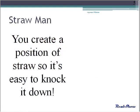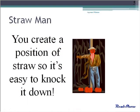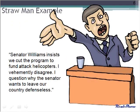Straw man. A straw man is responding only to an extreme or exaggerated representation of the opposing view, or even creating a false position for it. In other words, you create a position of straw so it's easy to knock down. Here's an example: we've taken William's desire to not fund attack helicopters and painted it as a desire to not defend our country. This is a straw man.